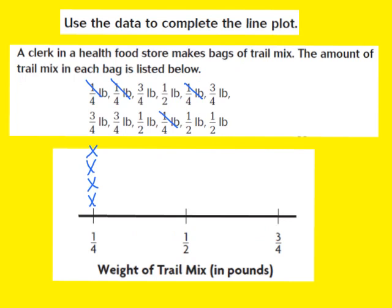Now I'll count how many 1/2 pound bags we have. I see 1 half-pound bag, so I'll cross that off and put an X above the 1/2. Here's 2 — cross that off and place another X. Here's 3 — cross that out and place an X. Here's 4 — cross that off and place another X above our 1/2. For the 1/2 pound bags there were 1, 2, 3, 4, so in our line plot we now have 1, 2, 3, 4 X's.